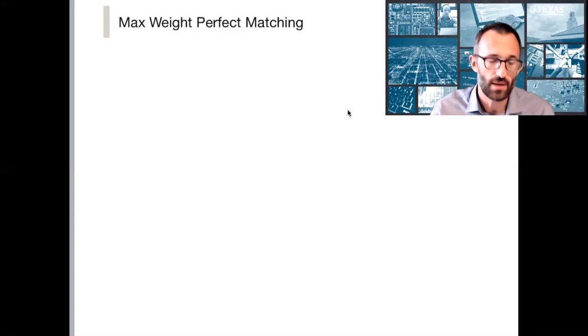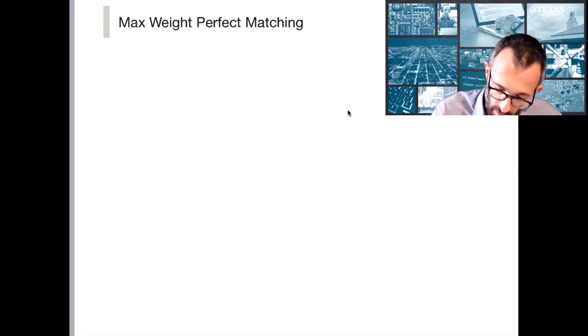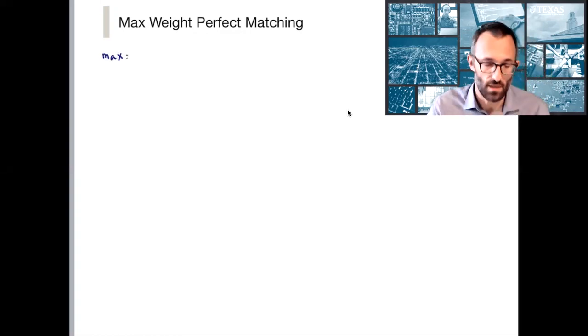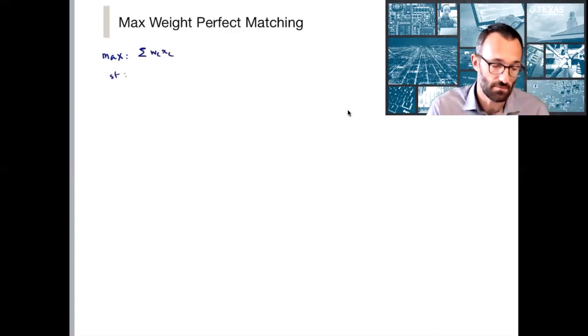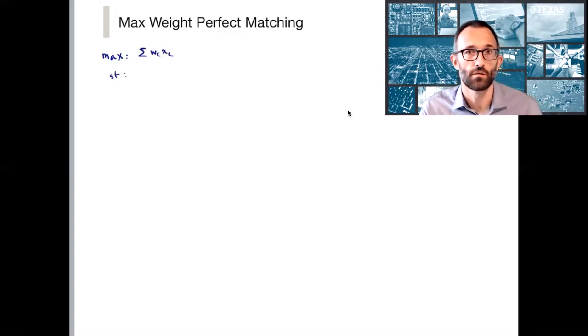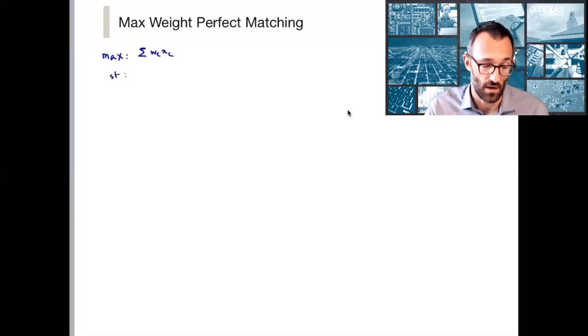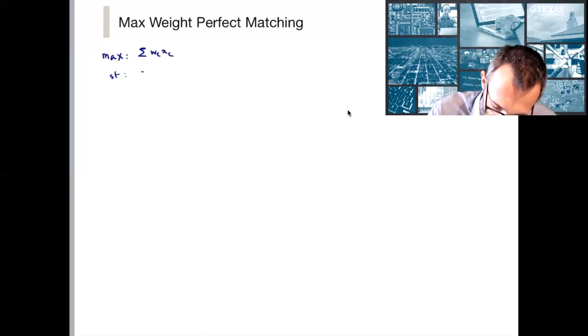So let's write down the primal and the dual problem for maximum weight perfect matching. We have a weight vector which I'm assuming is non-negative, max sum of w_e x_e subject to the perfect matching constraints. Now we've written down two different versions of the perfect matching polytope. I'm going to use one of these. We could have also used the other and tried to derive a primal-dual algorithm based on that.